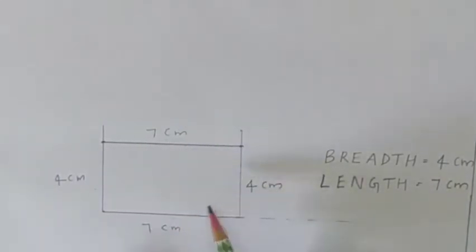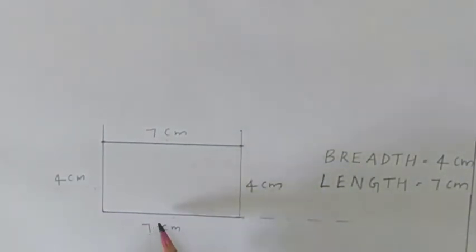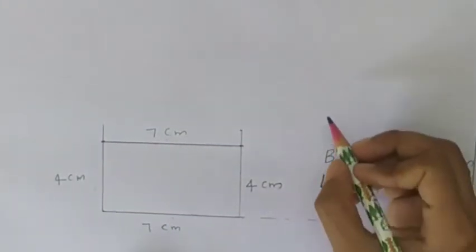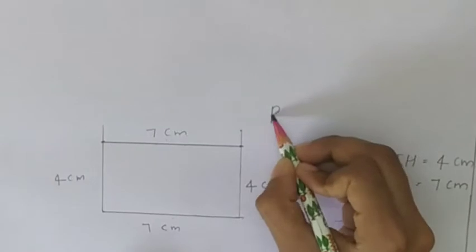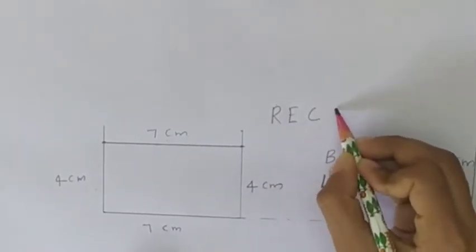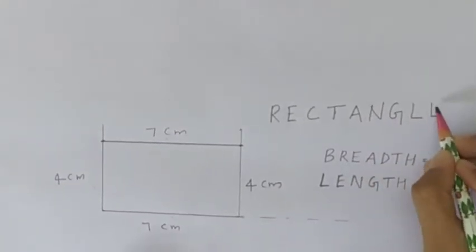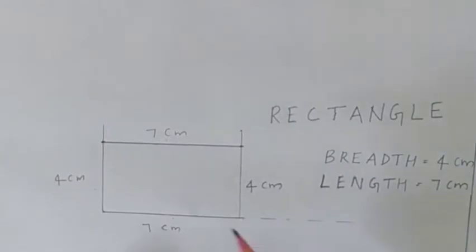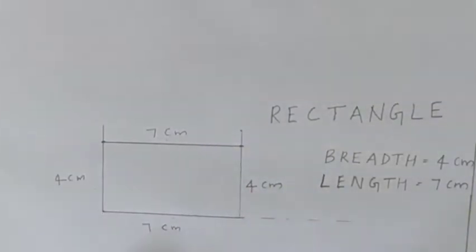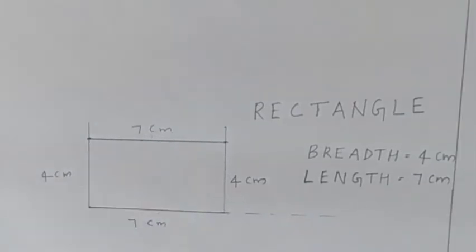This type of four-sided figure — one, two, three, four — in which the lengths are equal and the breadths are equal is called a rectangle. R-E-C-T-A-N-G-L-E. Rectangle. Four-sided figures in which the lengths and breadths are equal are called rectangles.